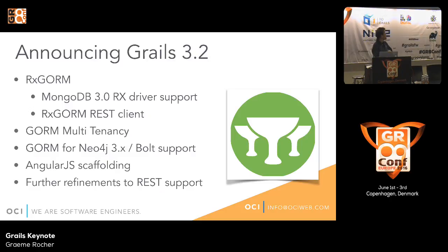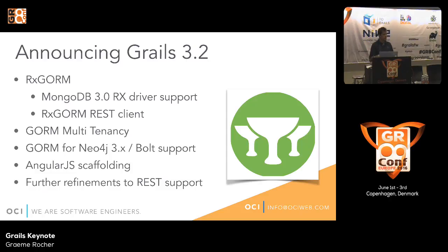Today we want to announce the next major milestone of the Grails 3 line, which is Grails 3.2. We're targeting a GA release in the next few months. It's based on the same key platform as the 3 line, so there's not going to be any problem upgrading from 3.1 to 3.2 or from 3.0 to 3.2. Most of the enhancements are plugins to the platform or minor tweaks to the Grails 3 line.